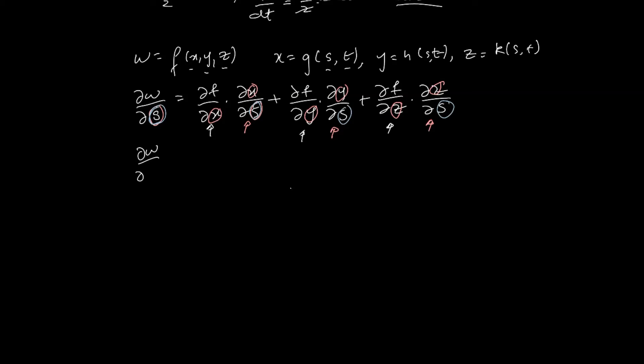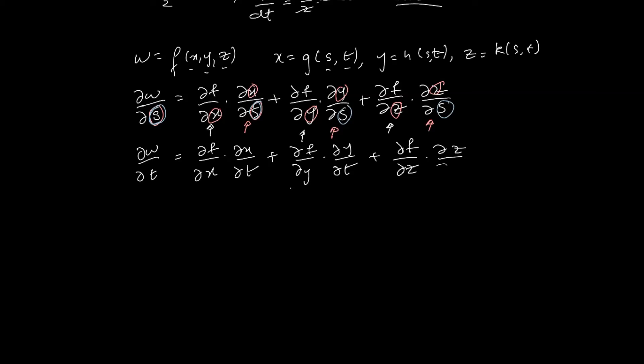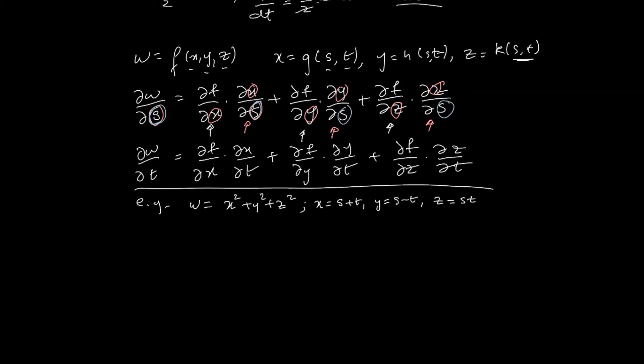Similarly, we can calculate ∂w/∂t: it equals (∂f/∂x)(∂x/∂t) + (∂f/∂y)(∂y/∂t) + (∂f/∂z)(∂z/∂t). And if you had additional independent variables, say s, t, u, you could also compute ∂w/∂u in exactly the same way — the structure of the chain rule doesn't change.